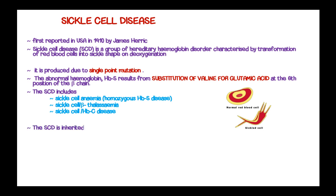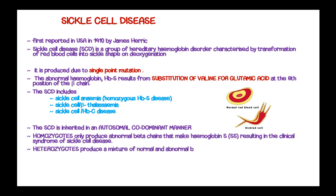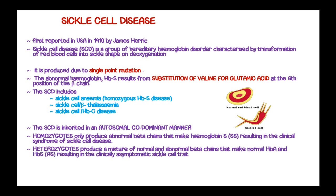Sickle cell disease is inherited in an autosomal codominant manner. Homozygotes only produce abnormal beta chains that make hemoglobin S, resulting in the clinical syndrome of sickle cell disease, whereas heterozygotes produce a mixture of normal and abnormal beta chains making HbA and HbS, resulting in the clinically asymptomatic state known as sickle cell trait.